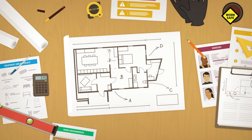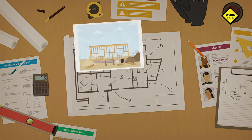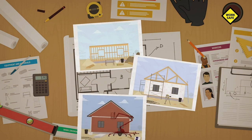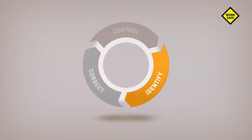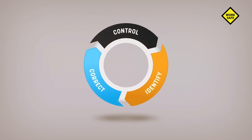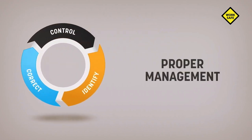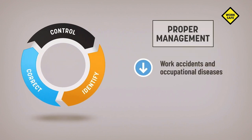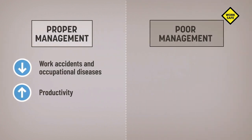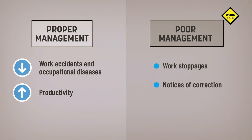Every job site is unique and workplace hazards can change and evolve as construction progresses. That's why it's important to follow the identify, correct, control process to ensure proper management of occupational health and safety. This will help reduce work accidents and occupational diseases, increase productivity, and ensure you avoid poor management that can lead to work stoppages, notices of correction, or even statements of offense from the CNESST.